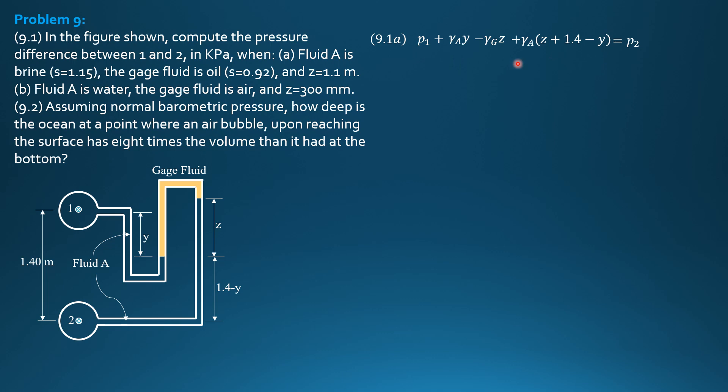So, P1 minus P2 equals gamma of the gauge liquid times Z. And, this becomes minus gamma of fluid A times Z plus 1.4. Because, we cancelled gamma A times negative Y and gamma AY. So, equals gamma of gauge liquid times Z minus gamma of fluid A times quantity Z plus 1.4.